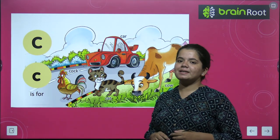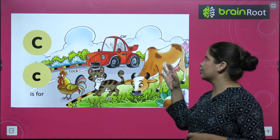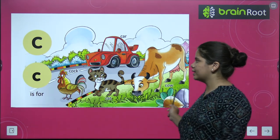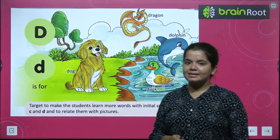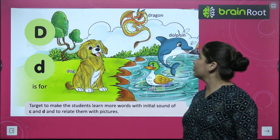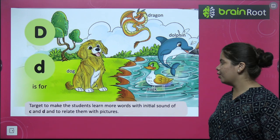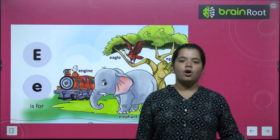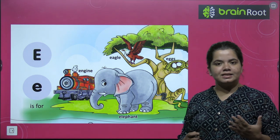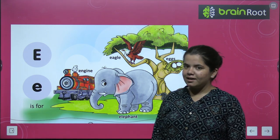Next hamare paas hai C. C for cat, C for cock, C for car, C for camel, C for cow. Bahut saare ho sakte hain. Next hai D. D for dog, D for dragon, D for dolphin, D for duck. Aur kya ho sakta hai — D for dinosaur, D for drum. Toh aap drum bhi likh sakte hain.